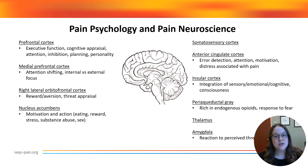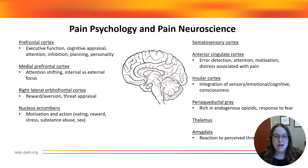The anterior cingulate cortex is involved in error detection, salience, escape and avoidance behaviors, and the difficult emotions wrapped up in those experiences. Increased activity in this area is associated with greater distress associated with pain. High pain-related distress is associated with reductions in gray matter volume and white matter connectivity in this area, but when patients address and reduce distress, we see increases in volume and connectivity here.